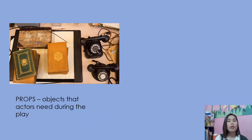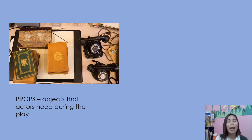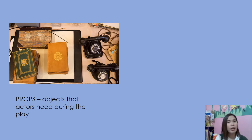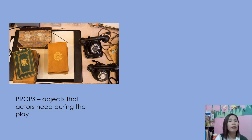Next element, we have props — these are the objects that actors need during the play. They are items held or used by the actors on stage to make the action more realistic. Sometimes, naturalistic performances use many props, but when staging a drama, you should question what is really necessary, because too many props can be difficult for the actor to use and can slow the action.